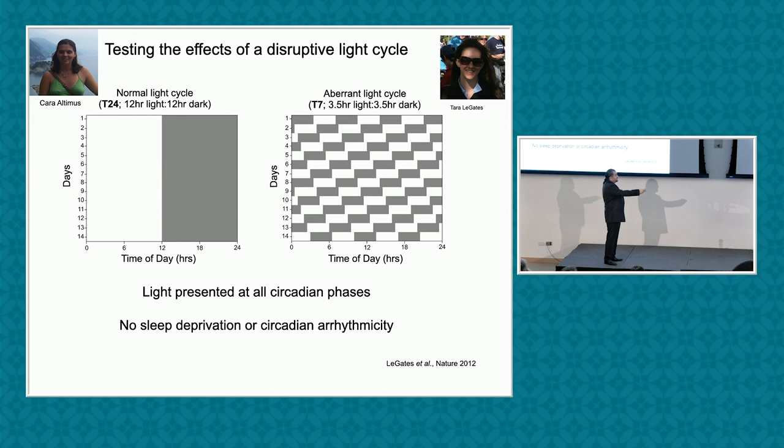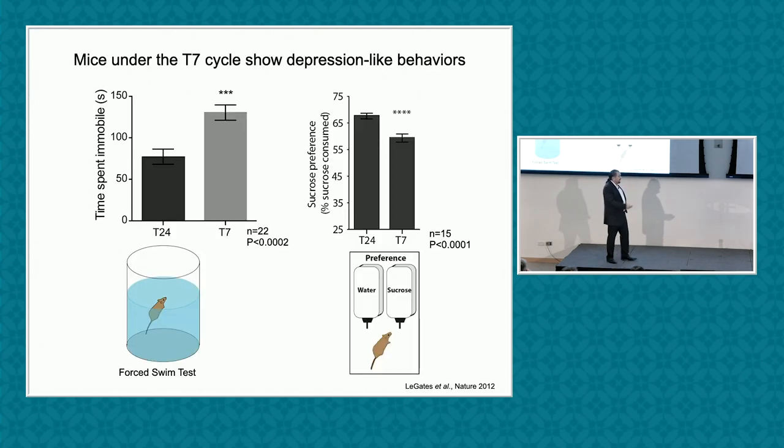I thought that was a crazy idea, till these two amazing women in the lab, Cara and Tara, came up with a cycle that allowed us to do this, called the T7 cycle, where you give 3.5 hours of dark, 3.5 hours of light, and you repeat them for two weeks. I'm not going to show you the data, but in this animal, light is presented at all circadian phases, but it doesn't cause sleep deprivation or circadian arrhythmicity. However, when you look at mood-related behavior, I'm just going to tell you about the sucrose preference test. Sucrose preference is the ability to test animals' drive for sugary stuff. All organisms like sugary stuff. If you give the mice two bottles of water, one spiked with sucrose, they drink nearly 70% to 80% of the time from the sucrose spiked water.